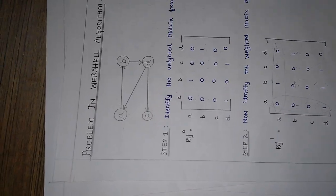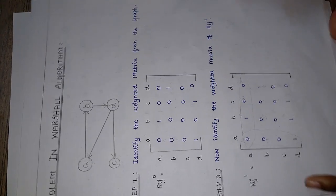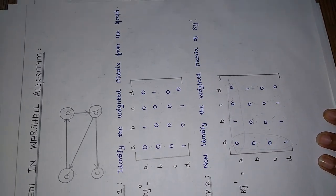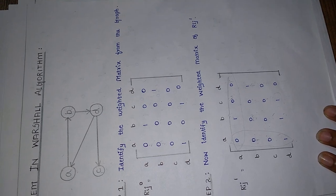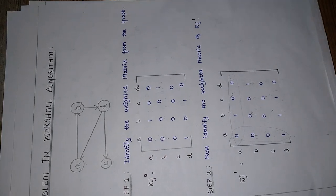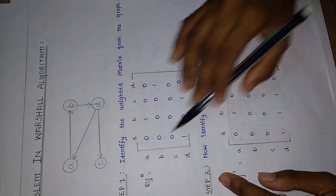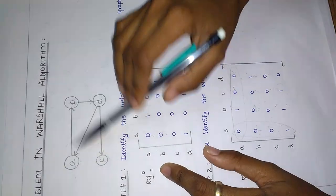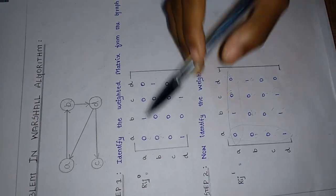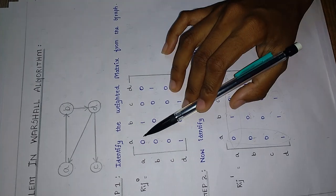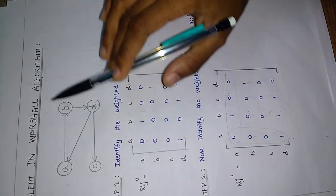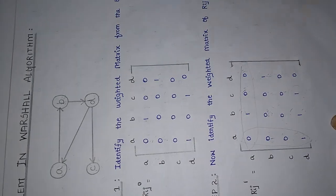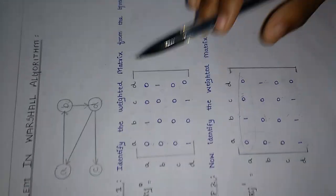Consider a given example graph. Step 1: we have to identify the weighted matrix from the graph. We have to write in the matrix form. All of A[i][j] is 0. A, B, C, D. A to A, we have no path, so it's 0. From A to B, we have a path, so it is 1. A to C and A to D, we have no path, so it's 0 and 0.